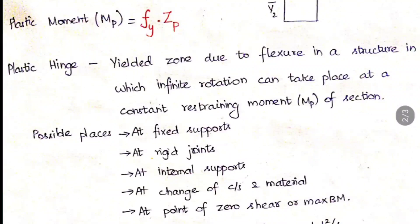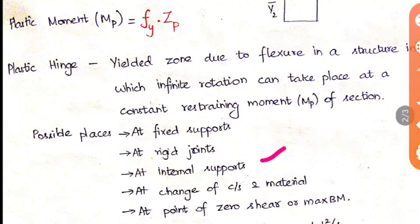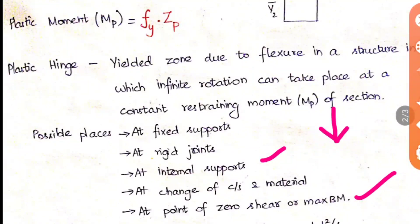In exam questions they give a structure and ask how many plastic hinges are present, so we need to know where plastic hinges actually occur. Plastic hinges occur: at fixed supports, at rigid supports, at internal supports, at changes of cross section or material, and at the point of zero shear or maximum bending moment. Also at a concentrated load, where zero shear or maximum bending moment may occur — this is also one location.